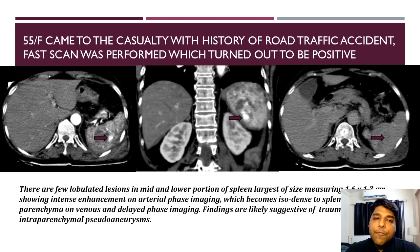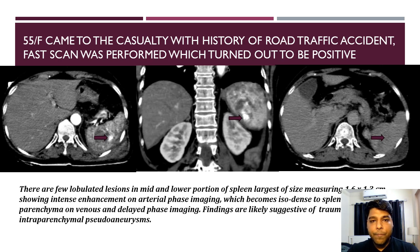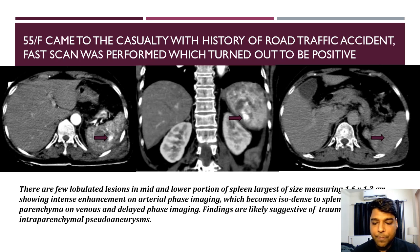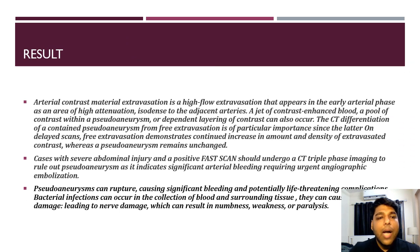Case 5: A 55-year-old female came to casualty with history of road traffic accident. FAST scan was performed which turned out to be positive. There are a few lobulated lesions in the mid and lower portion of the spleen, the largest measuring 1.6x1.3 cm, showing intense enhancement on arterial phase imaging which becomes isodense to the splenic parenchyma on delayed phase images, findings likely suggestive of traumatic intra-parenchymal pseudoaneurysm.